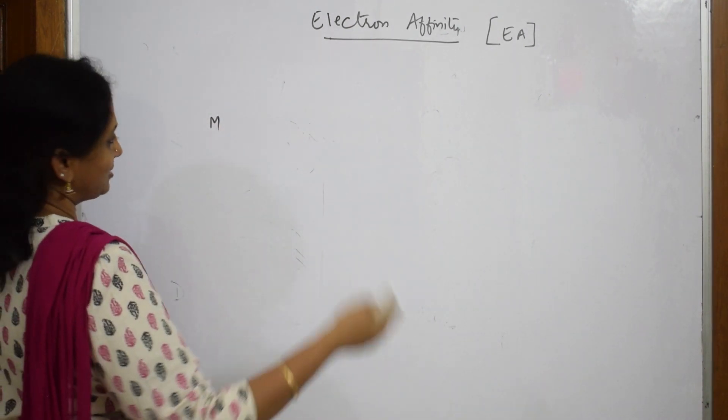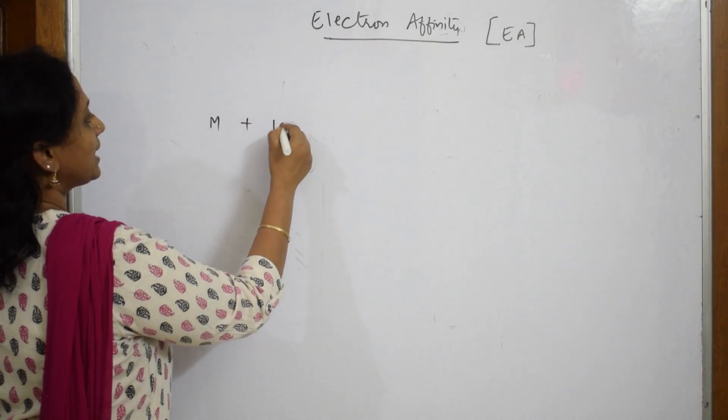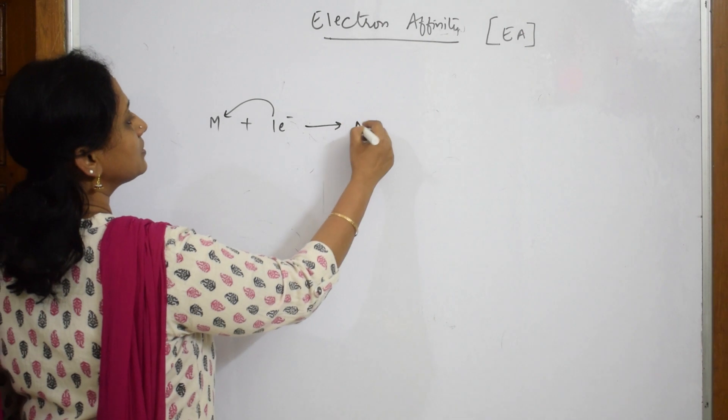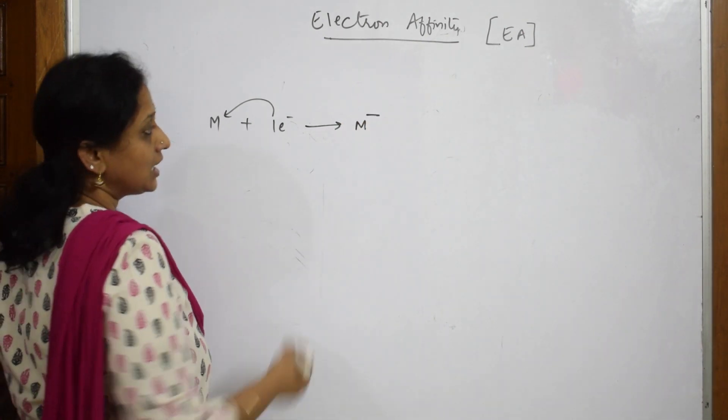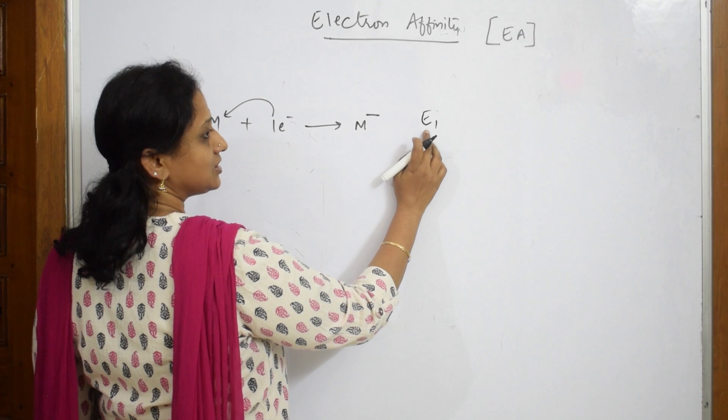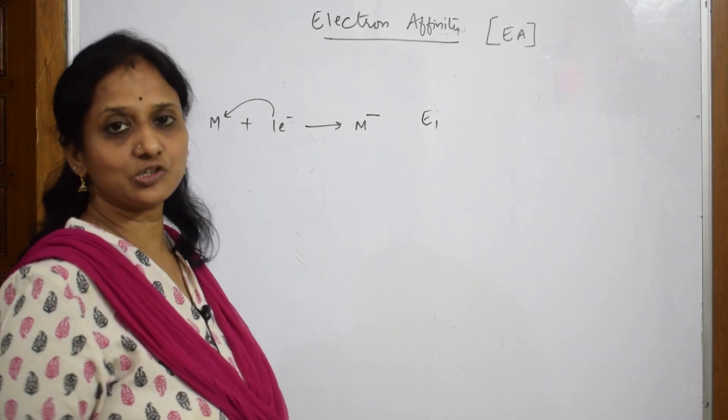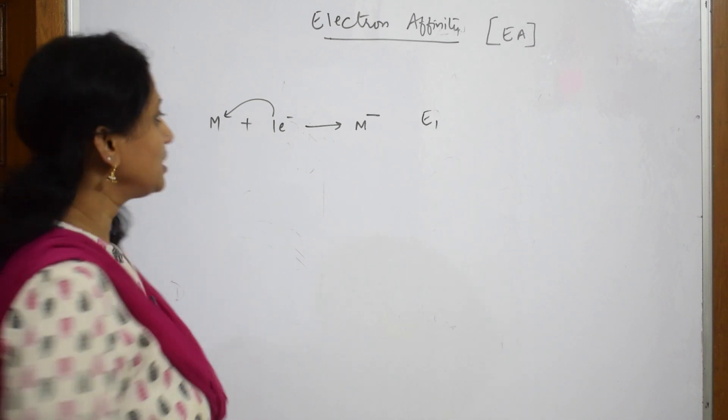I'm going to add one electron to this. When it's accepting this electron, what will happen? It becomes M minus. And now the amount of energy released here during this process is called electron affinity. We can also call it electron gain enthalpy.